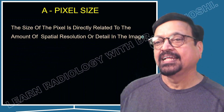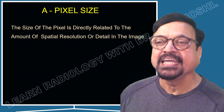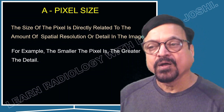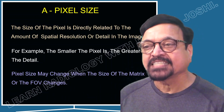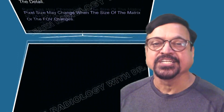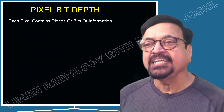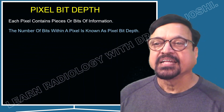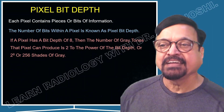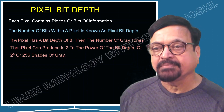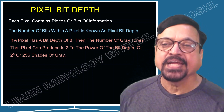The size of the pixel is directly related to the amount of spatial resolution or detail in the image. For example, the smaller the pixel, the greater the detail. Pixel size may change when the size of the matrix or the FOV changes — so these are all interlinked. Each pixel contains bits of information; the number of bits within a pixel is known as the pixel bit depth. A pixel has a bit depth of 8 when the number of gray tones it can produce is 2 raised to 8, which equals 256 shades of gray.